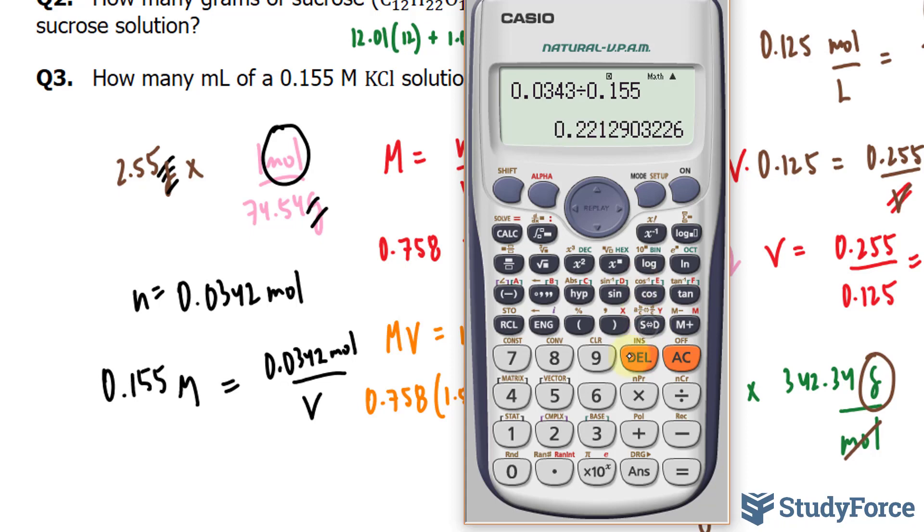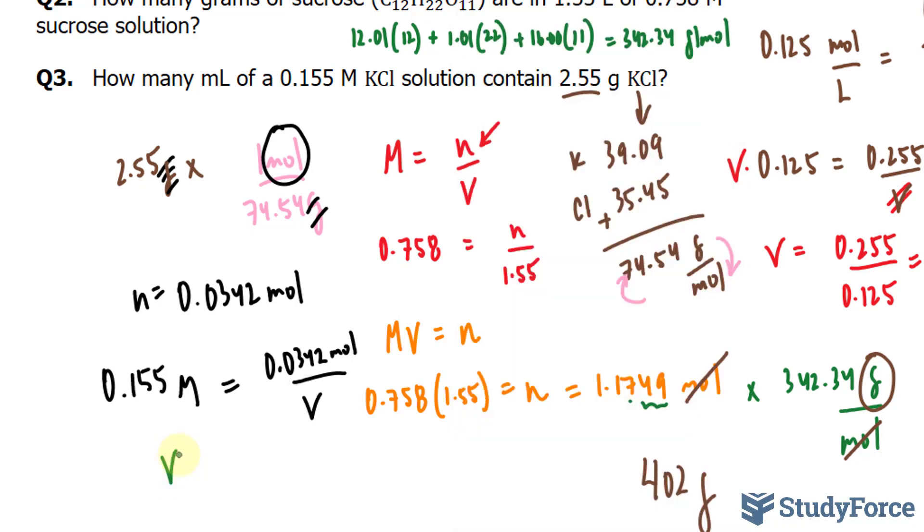So let's go ahead and do that. We have 0.0342 divided by 0.155. This gives us a volume of 0.2212 liters.